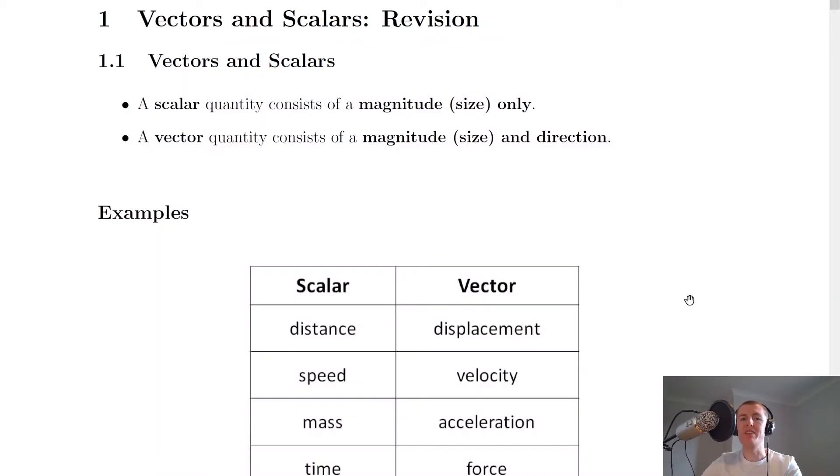What you should have learned at National 5 level is the difference between a scalar and a vector quantity. So the two definitions are given here and it says that a scalar quantity consists of a magnitude or size only.